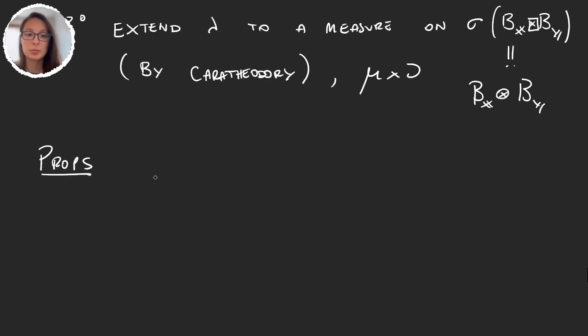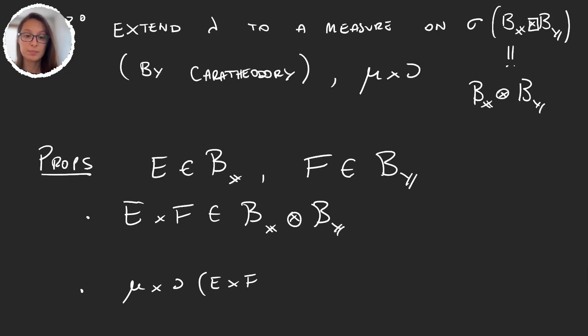So if we take some set E, that's in the sigma algebra B_X, and some set F, that's in the sigma algebra B_Y, then two things happen. First of all, E times F is an element in the sigma algebra of the product. And second, what we wanted that we said at the beginning. The product measure of E times F is the measure of E times the measure of F. And these are the two properties that we want product measures to have, just so that it makes sense to work with them.